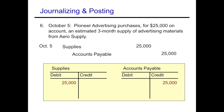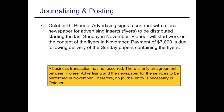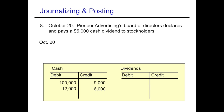On October 9th, Pioneer Advertising signs a contract with a local newspaper for advertising inserts to be distributed starting the last Sunday in November. Pioneer will start work in November, with payment of $7,000 due following delivery. However, no transaction has actually occurred — there's only an agreement for something to happen in the future. Because there is no transaction, no journal entry or posting is needed.